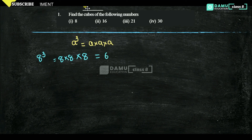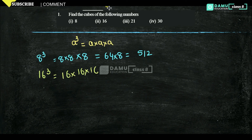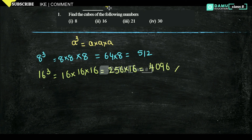8 into 8 gives us 64, and 64 into 8 will be 512. Our next one is 16 cube, that is 16 into 16 into 16. Then 16 into 16 gives you 256, and 256 into 16 will be equal to 4096.